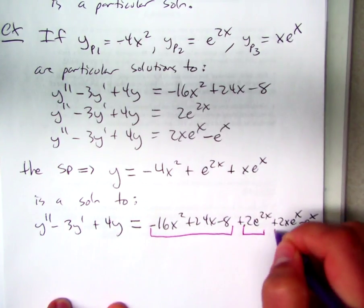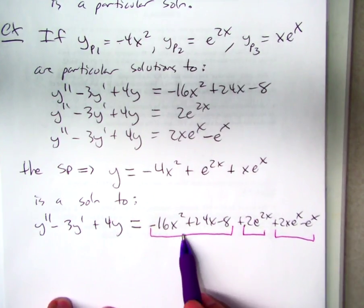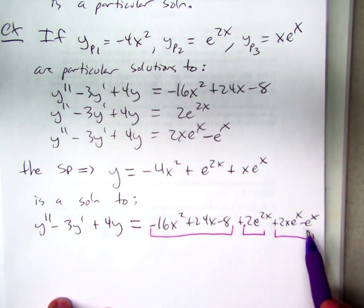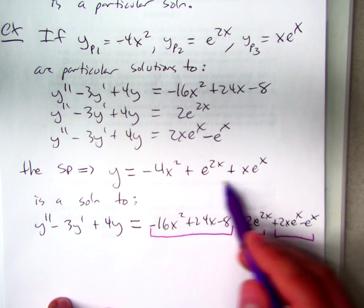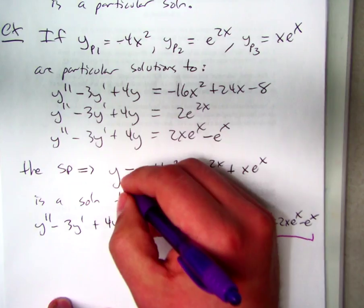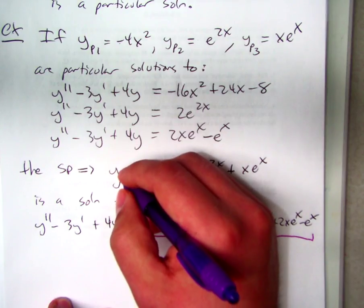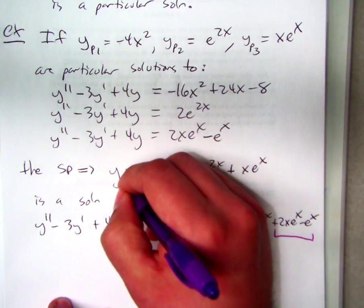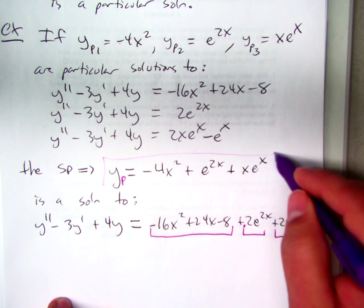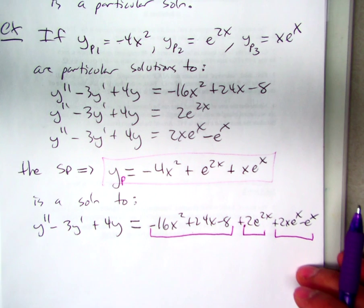This was satisfied by YP1, this was satisfied by YP2, this was satisfied by YP3. And then we could just combine all those three particular solutions. So then here we have, you know what, I should probably use this notation, YP. And that's pretty much it.